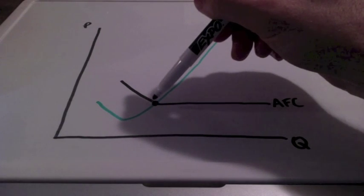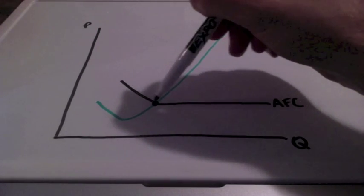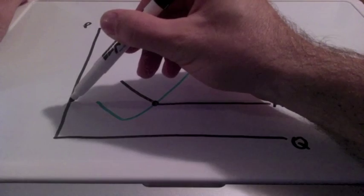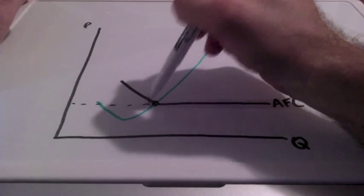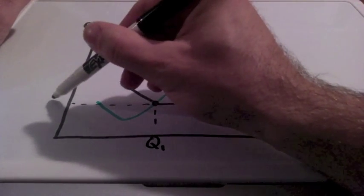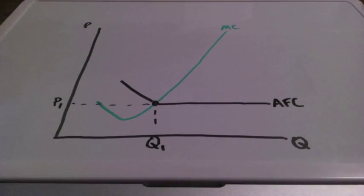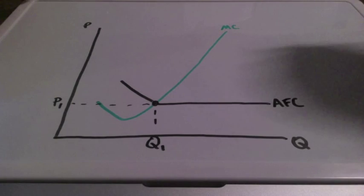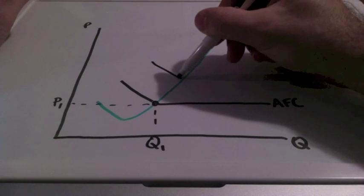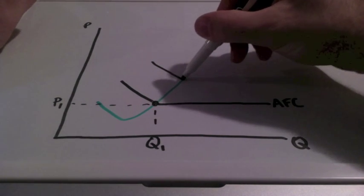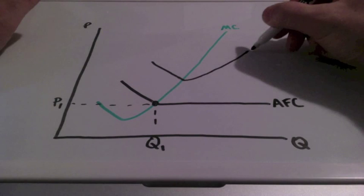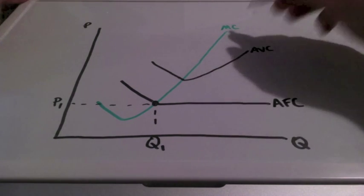Average fixed cost remains constant when it crosses the marginal cost curve. The next cost curve is going to be called our average variable cost curve. It's going to go down, and once it hits marginal cost, it's going to increase upward like marginal cost would.